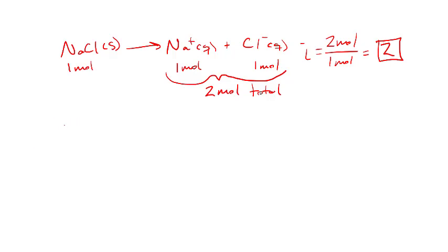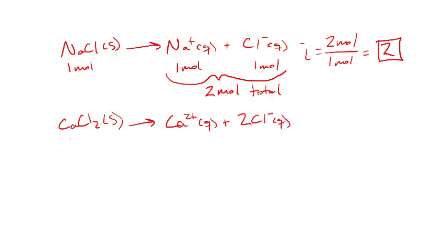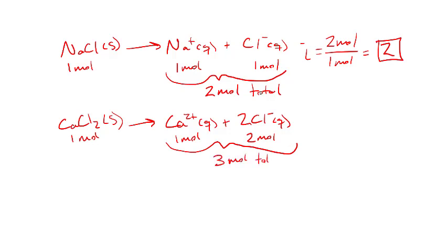Now consider calcium chloride. CaCl₂ is also a strong electrolyte, so it breaks up into Ca²⁺(aq) plus 2 Cl⁻(aq). If we put in one mole of calcium chloride, we get one mole of Ca²⁺ and two moles of chloride ions — three total moles of particles in solution. Therefore, the Van't Hoff factor for CaCl₂ is three moles over one mole, giving i = 3.